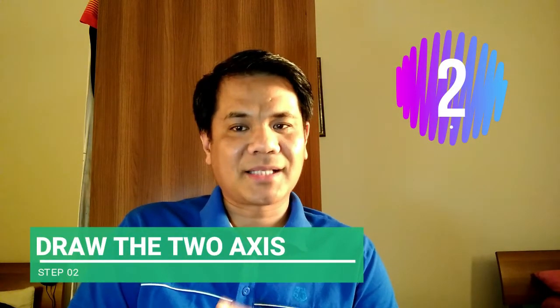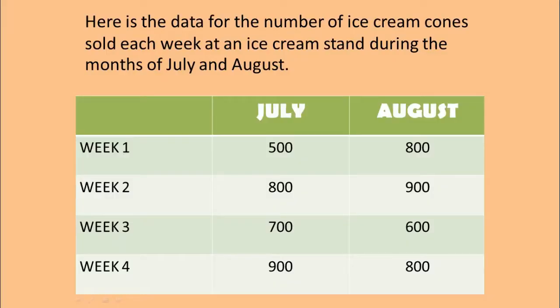Step number two: draw the two axes. One with the items being counted is your X axis, and one with the scale that is going to be used to count is your Y axis. The week numbers are the items being counted, so this will be your X axis.